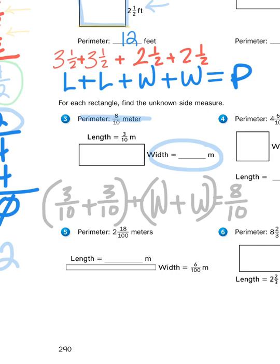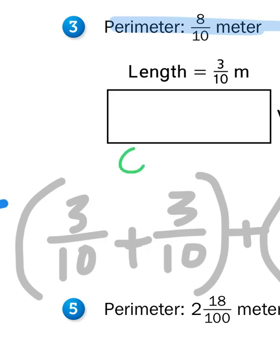Okay? So, what I have here is three tenths plus three tenths plus two unknowns. So, let's start with the first parentheses, three tenths plus three tenths. Well, three plus three, you know, is six. So, this part of my problem is six tenths.